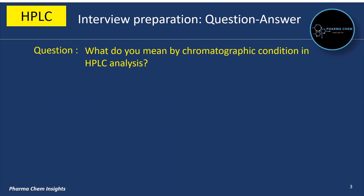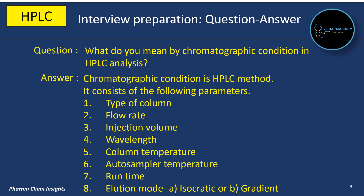What do you mean by chromatographic condition in HPLC analysis? Chromatographic condition is the HPLC method. It consists of the following parameters: type of column, flow rate, injection volume, wavelength, column temperature, auto sampler temperature, run time, and elution mode — whether it is isocratic or gradient.